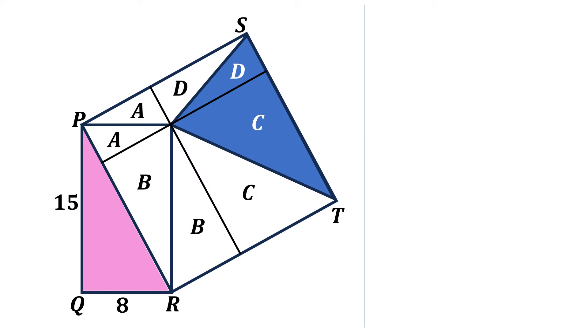Now, the area of triangle PQR is equal to this area because this is a rectangle and PR is the diagonal dividing it into two equal parts. So, the area of this triangle is equal to the sum of areas A and B. We have found the area of this triangle which is 60 square units, so A plus B equals 60.